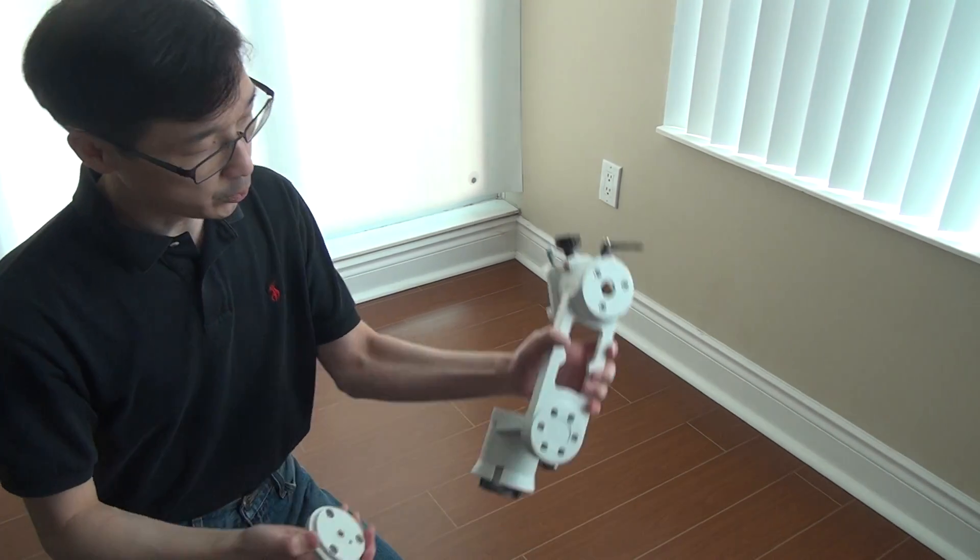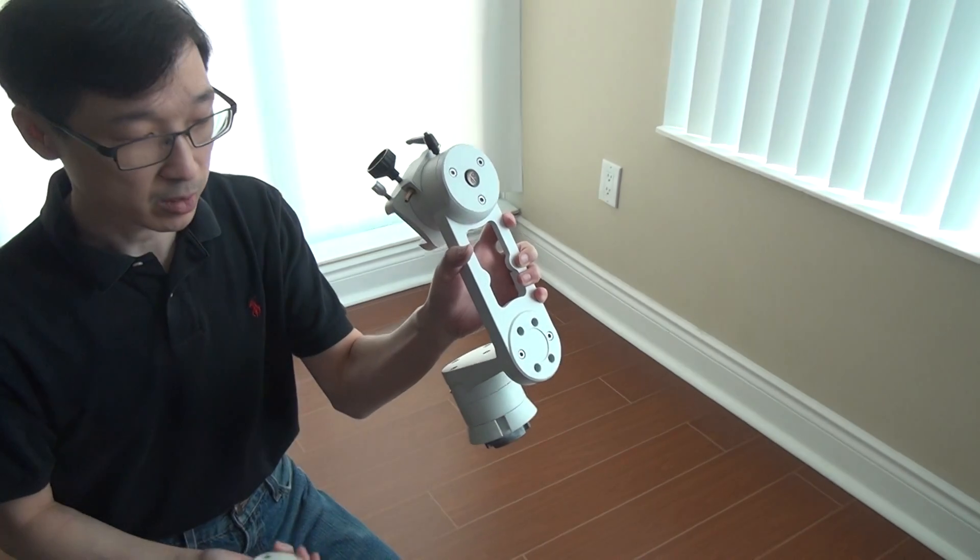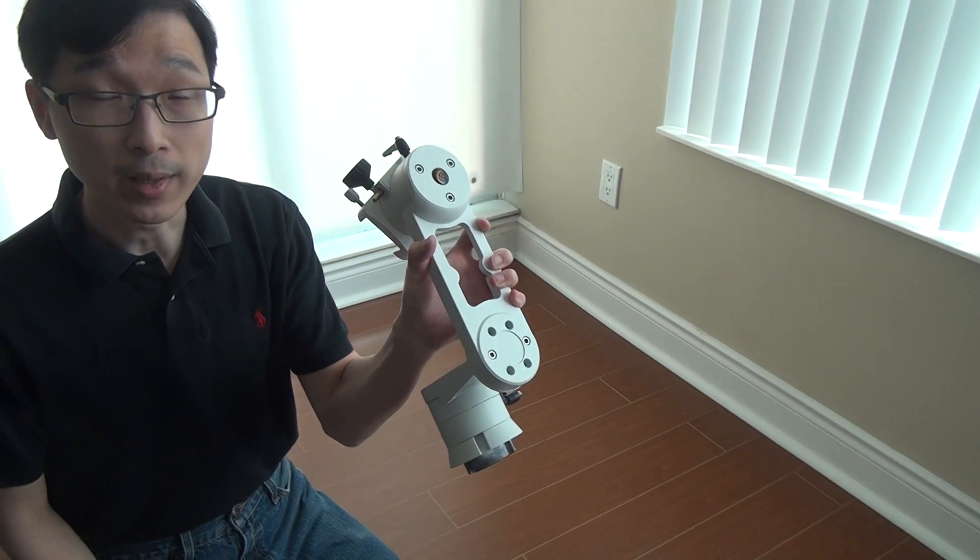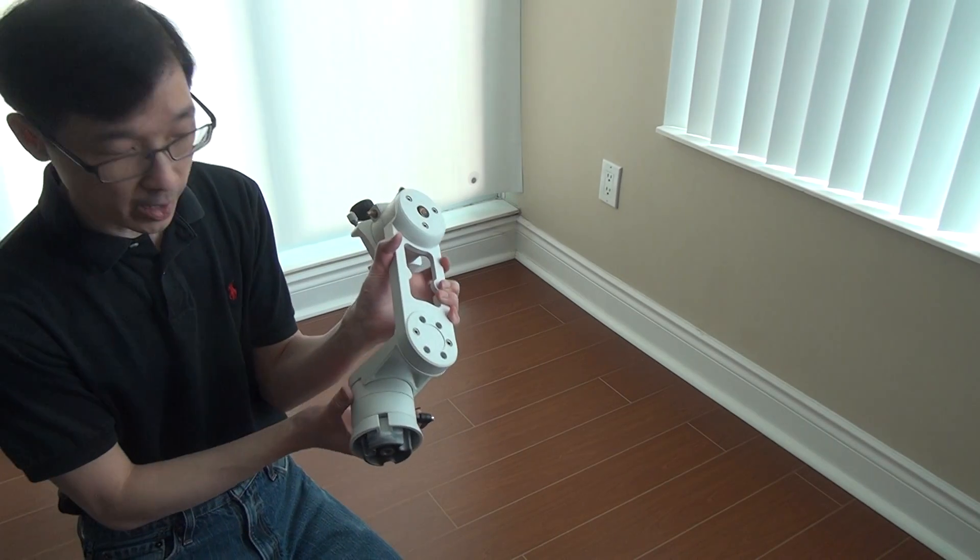It allows you to take the mount head of the Toilet One mount and mount it onto your own camera tripod. So let me show you how you can do that.